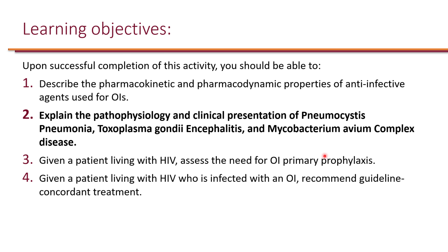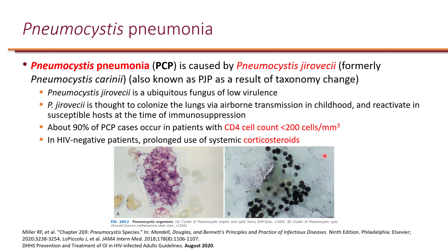The next learning objective is to explain the pathophysiology and clinical presentation of pneumocystis pneumonia, toxoplasma gondii encephalitis, and Mycobacterium avium complex disease. Pneumocystis pneumonia — PCP — is caused by Pneumocystis jirovecii, which is actually a fungus species. Some call it PJP due to nomenclature changes, but the DHHS guidelines still refer to it as PCP.